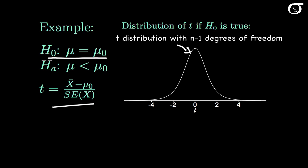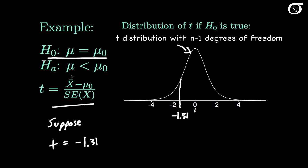The exact shape of the distribution depends on the degrees of freedom, but I've plotted a t-distribution here. Suppose we carry out our test and we get a value of our test statistic of minus 1.31. Since in this case our alternative hypothesis is that mu is less than mu0, values in the left tail of the distribution give evidence against the null hypothesis in favor of that alternative. So our p-value is the probability under the null hypothesis of getting what we observed or something even farther to the left — the area under the curve to the left of our test statistic.